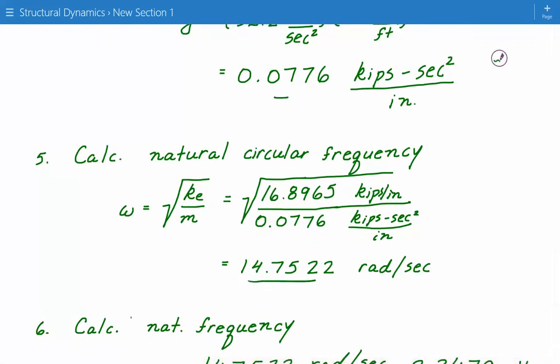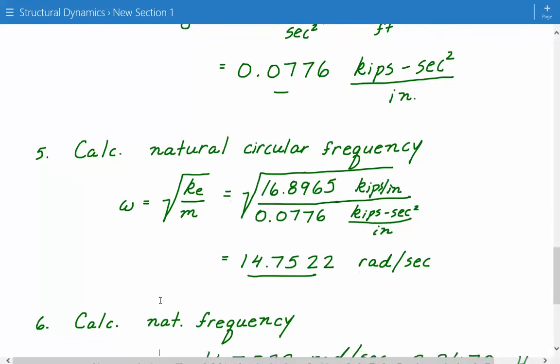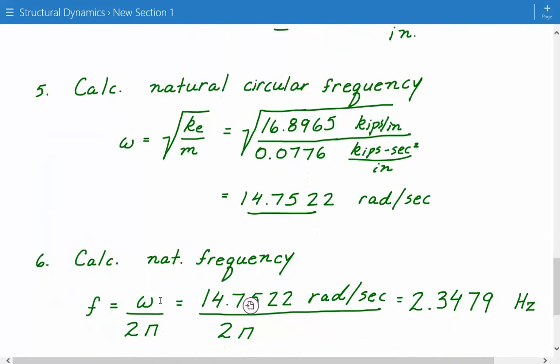Once we have the natural circular frequency, we can calculate the natural frequency, which is equal to f equals omega divided by 2 pi. Just plug in the numbers, 14.7522 radians per second, divided by 2 pi. And this gives us 2.3479 hertz.